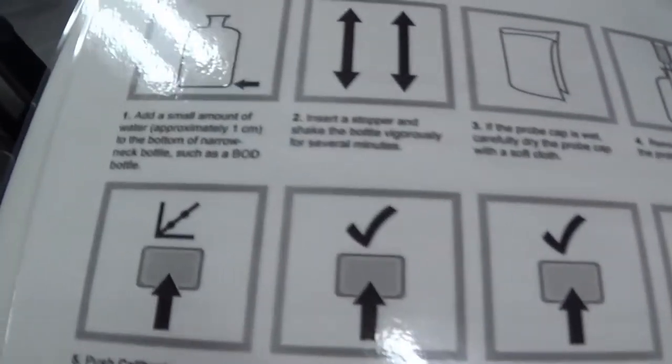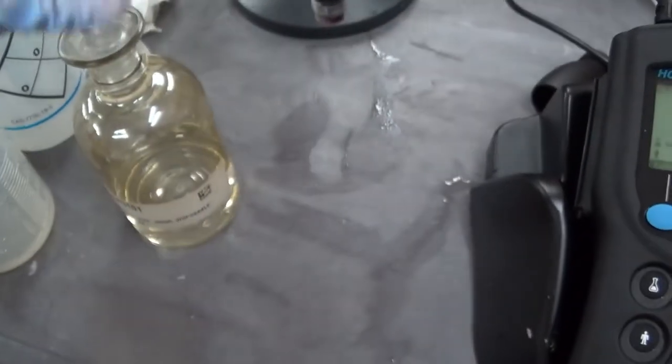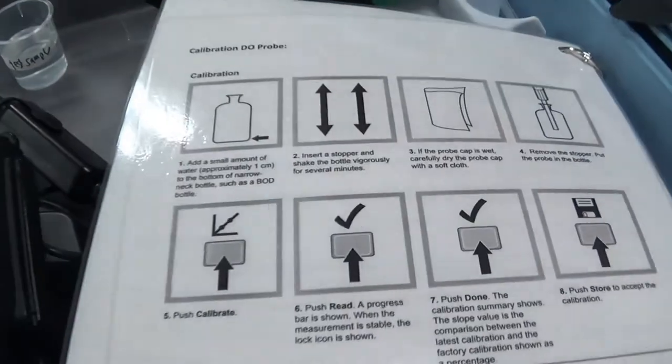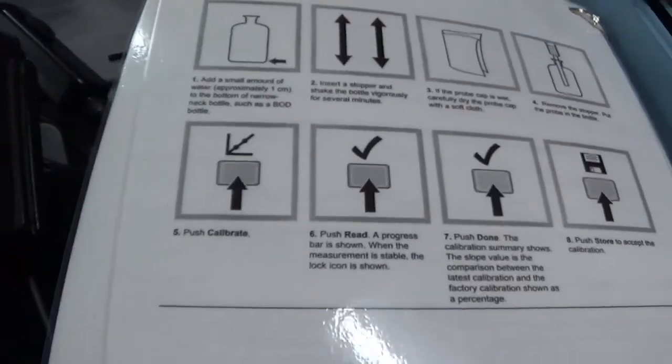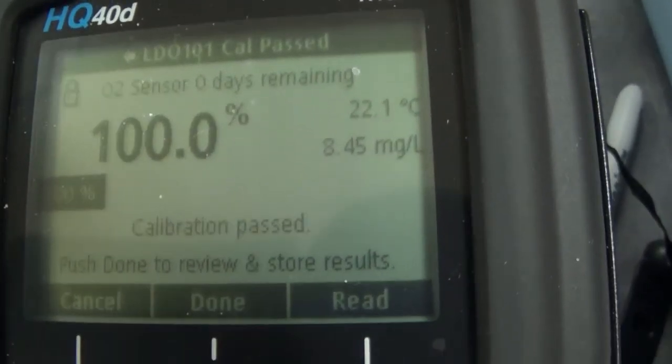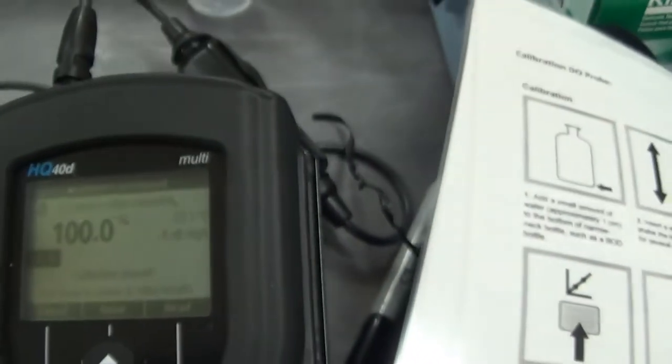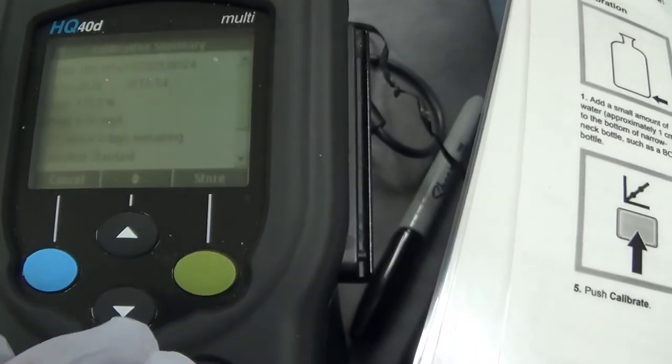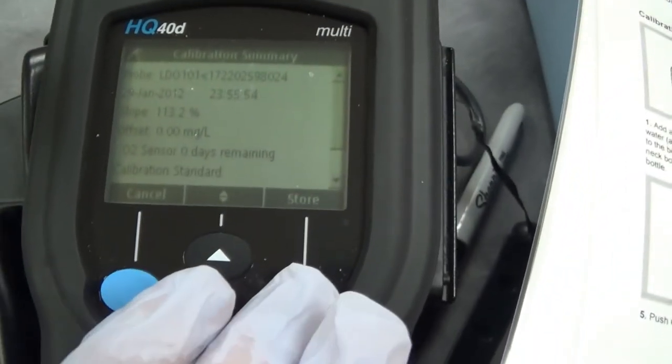Our directions are on the next page. We have our BOD bottle. We add a little bit of water to it. Then we are going to take the stopper, shake it for several minutes. I will do it for several minutes. Test stabilized. Calibration has passed. Push done to review and store results. Done. There is our results there. And store.